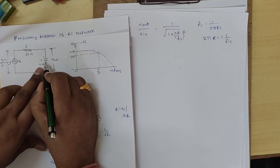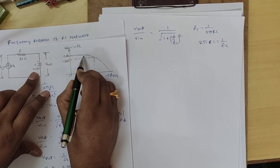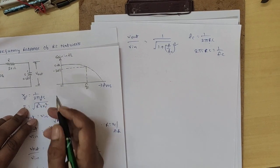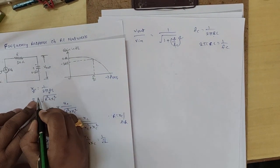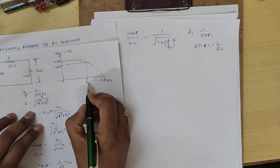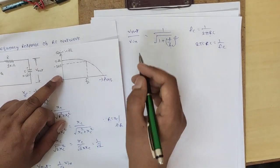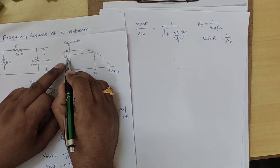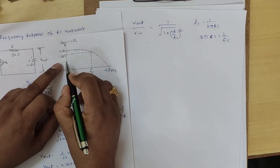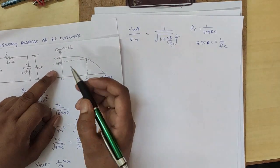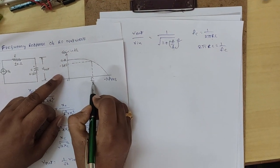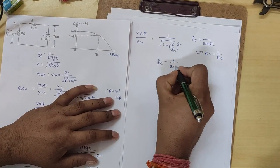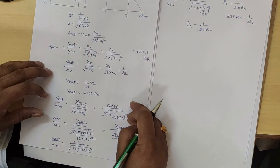At cutoff frequency F = Fc, reactance of the capacitance equals the resistance value, and you will get 0.707 times the input voltage: V_out = 0.707 × V_in. Then gain in dB = 20 log(V_out / V_in) = 20 log(0.707) = -3 dB at cutoff frequency. Now calculate the cutoff frequency: Fc = 1/(2πRC). From the circuit, we are using a 1 kΩ resistor and a 0.1 μF capacitor. From these values, Fc = 1/(2π × 1kΩ × 0.1μF) = 1.592 kHz.